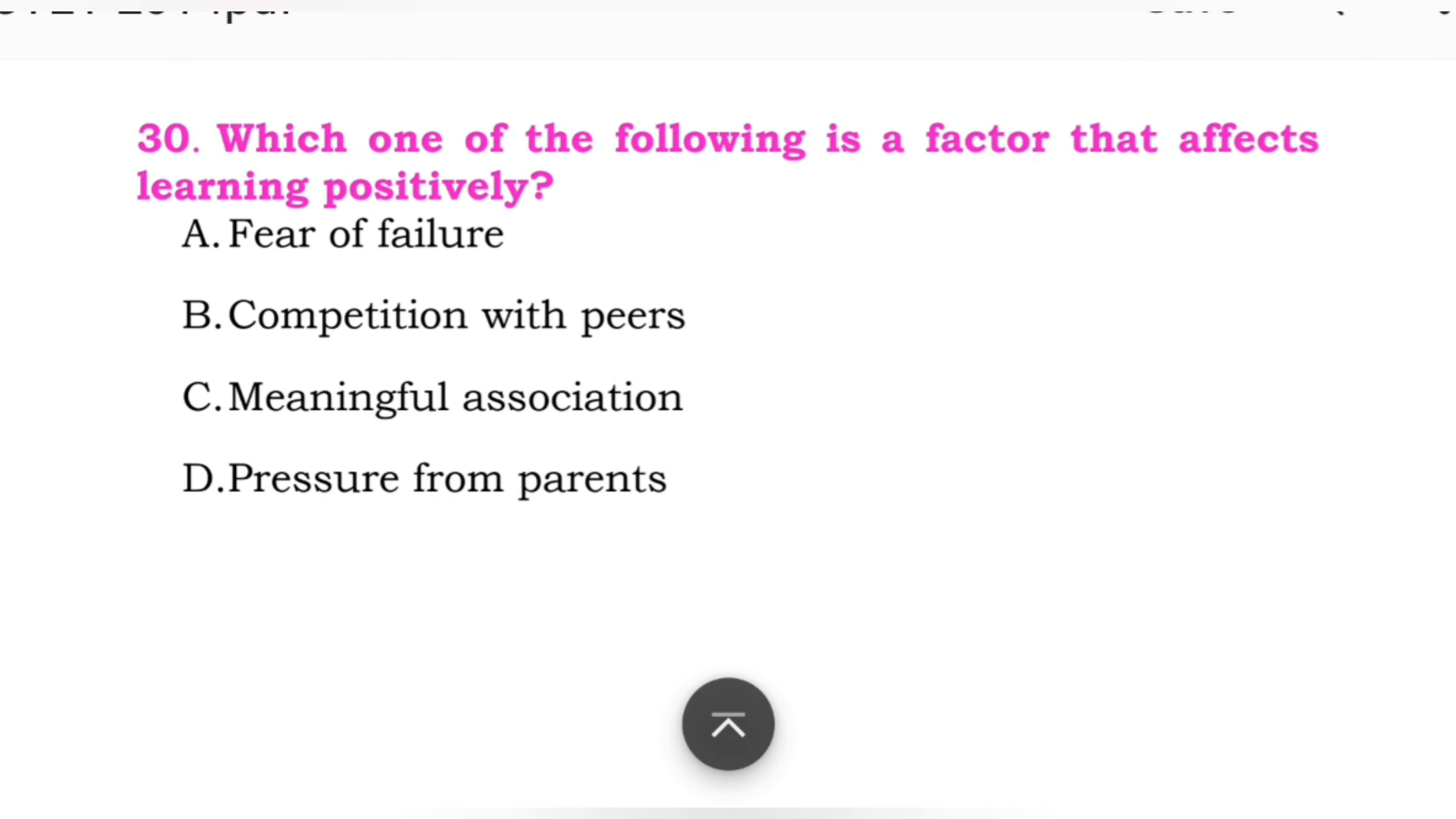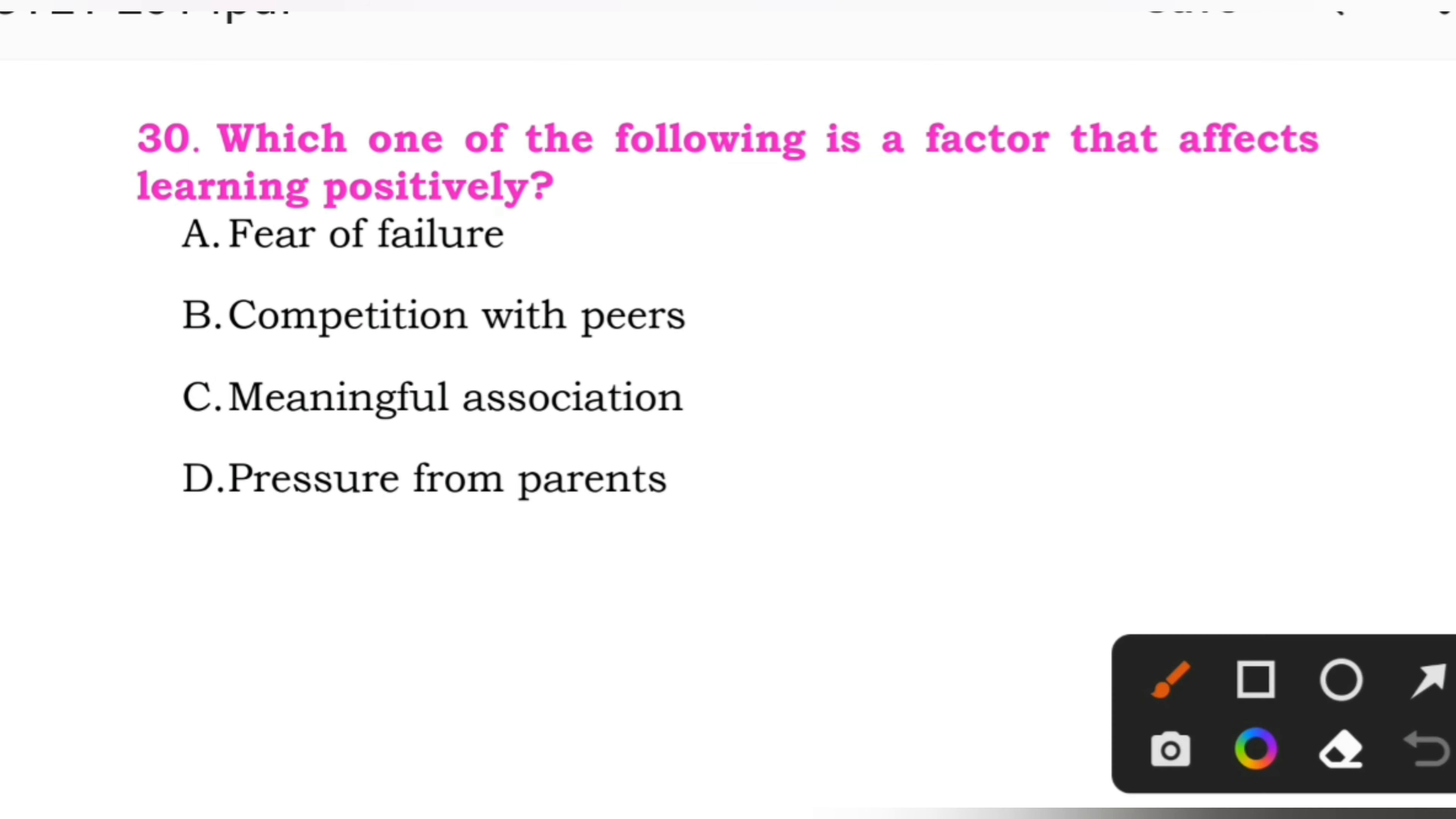Last question, question number 30: Which one of the following is the factor that affects learning positively? Options: A: fear of failure. B: competition with peers. C: meaningful association. D: pressure from parents. Here the right answer is C, meaningful association.